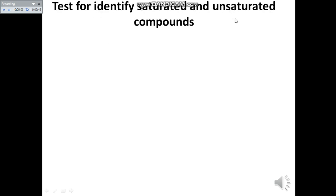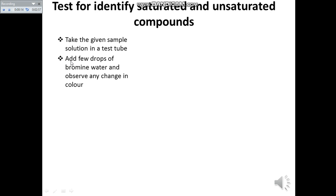Next: how to test and identify saturated and unsaturated compounds. First, take a sample solution in a test tube. Second, add a few drops of bromine water into the solution and observe any change in color.